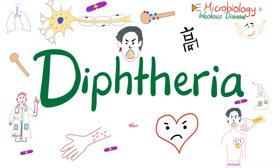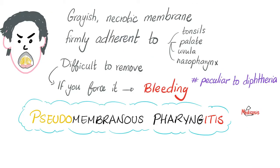Now let's get started. What's unique to diphtheria is the grayish necrotic membrane that's firmly adherent to the tonsils, palate, uvula, and nasopharynx. It's very difficult to remove this membrane; if you force it, the tissue will bleed. This is peculiar and unique to diphtheria. When you see this on your exam question, the answer is diphtheria — take it to the bank.